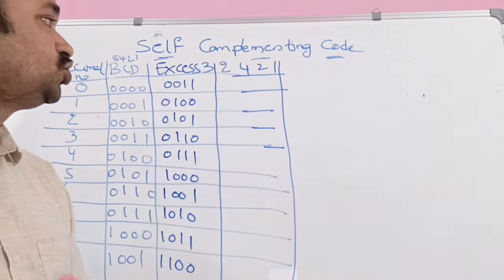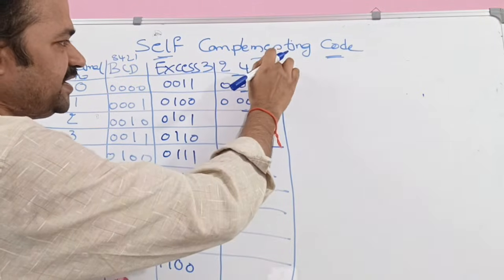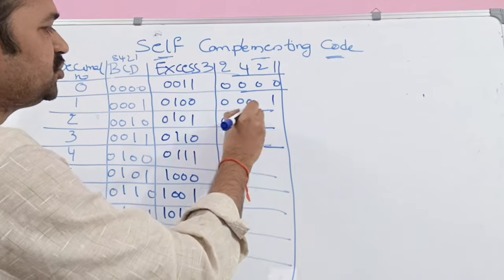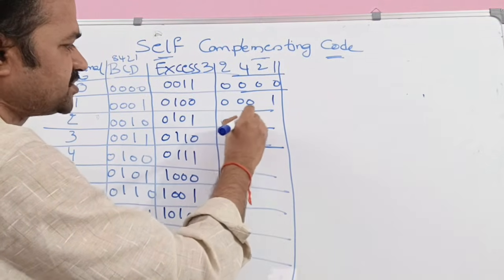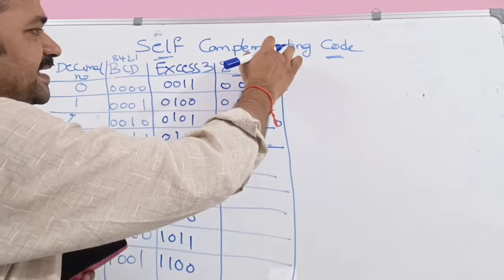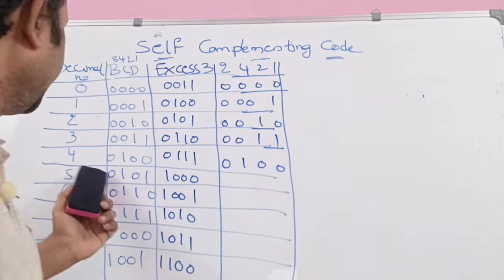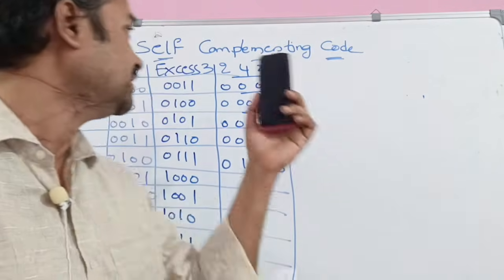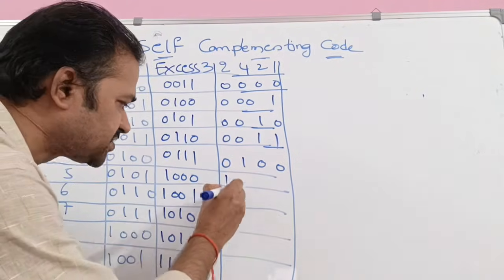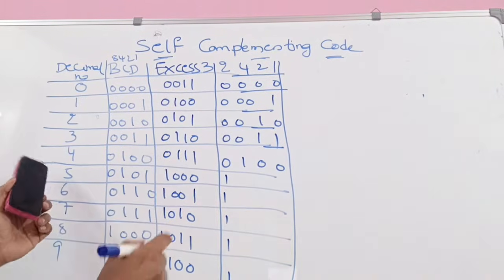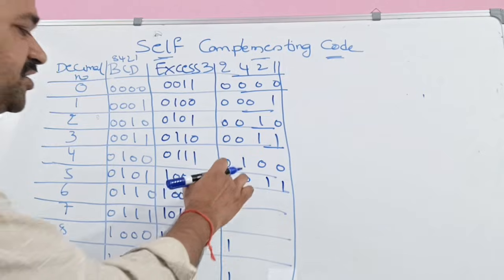Now let us represent the 2421 code. For 0, all bits are 0. For 1, we write 1 at the least significant bit position: 0001. For 2, starting from LSB: 0010. For 3, 1 plus 2 from LSB: 0011. For 4, the code is 0100. Now for 5, to demonstrate 2421 as a self-complementing code, we need to place 1 in the most significant bit position: 5 means 2 plus 2 plus 1, so we write 1011.